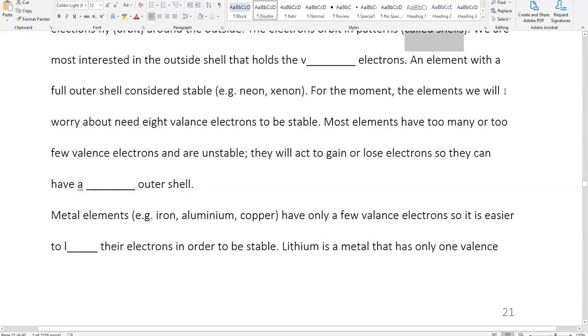We are most interested in the outside shells that hold the valence electrons. Hydrogen and helium have an outer shell that can only hold two electrons. The first shell only holds two electrons. But for us, we're just going to learn that the outer shell usually holds eight. An element with a full outer shell is considered stable. So the noble gases, neon and xenon, have a complete outer shell with eight electrons. Because of that, they don't really want to bond with other elements.